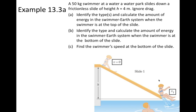In this example, we have a 50-kilogram swimmer at a height of four meters above the bottom of the slide, and she's going to slide down into the water. Part A wants us to identify the types of energy present and calculate the amount of energy in the swimmer-Earth system. There is no spring or elastic material, so elastic potential energy is zero. The system is starting from rest, therefore the initial kinetic energy is also zero. But the swimmer is at a raised position, so there will be gravitational potential energy.